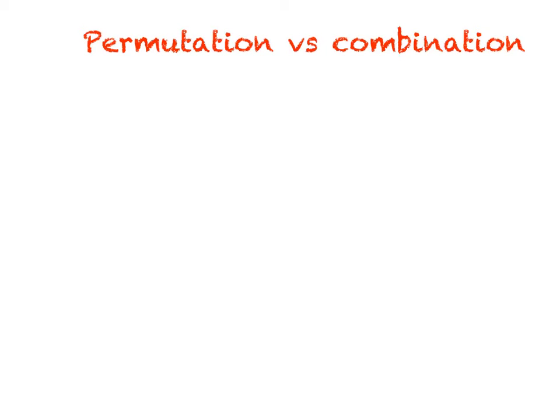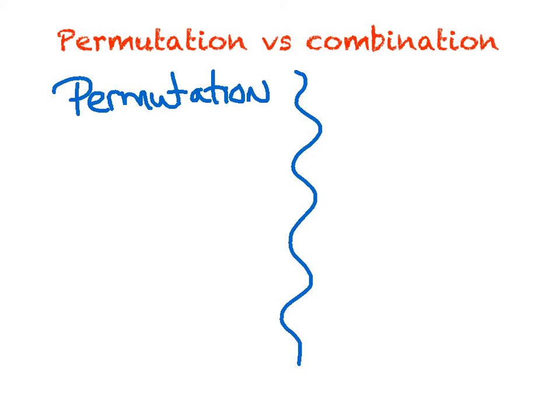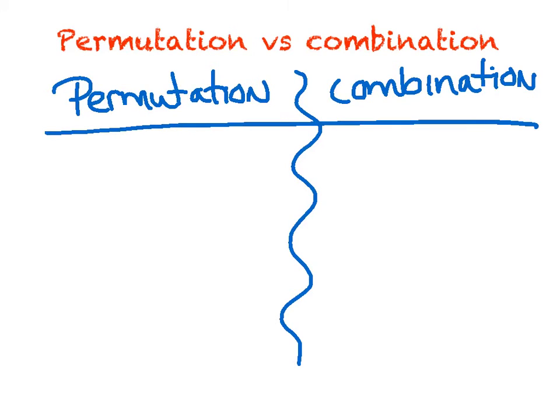Welcome back! Our topic today is permutation versus combination. This is a huge part of our probability unit, deciding what you're given. Is it a permutation or is it a combination? So let's go ahead and split our paper up here. We'll call one side permutation and we'll break it up and we'll call the other side combination. We'll try to decide ways to help us recognize when to use the permutation versus the combination.